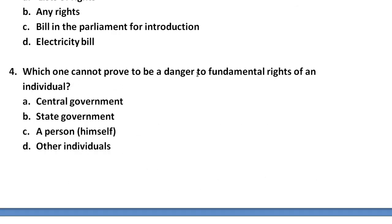The next question asks: Which one cannot prove to be a danger to fundamental rights of an individual? Is it the central government, the state government, a private individual, or other people? Consider which of these cannot be a danger to fundamental rights of an individual — which one does not prove to be a danger.